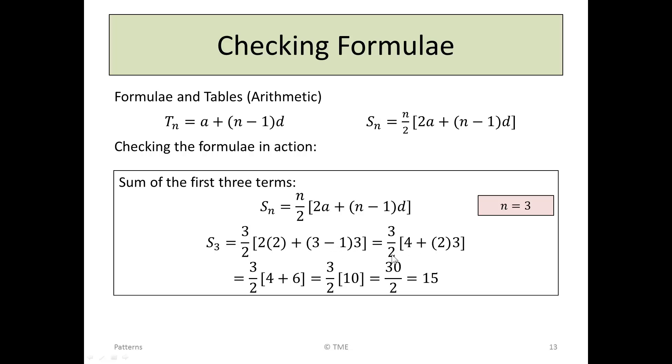It becomes 3 over 2 into 4 plus bracket 2 times 3. Multiplying out the brackets, 2 times 3 becomes 6. It's 3 over 2 into 4 plus 6. Working within the brackets, 4 plus 6 is 10. 3 over 2 times 10 is 30 over 2, or 15. If the formula is correct, the sum of the first three terms should equal 15.